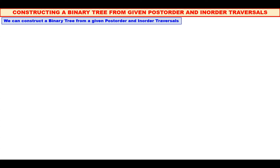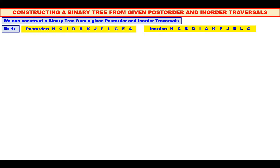We shall consider one example. This is our post-order and this is our in-order. In post-order, first the left sub-tree is processed, then the right sub-tree is processed, and at last the root is processed. Very important in post-order: the root is processed at the end, at last.